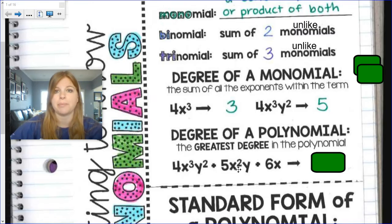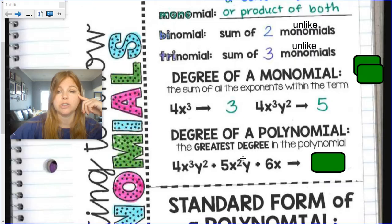Look at the second term separately. 2 plus, remember there's an exponent of 1 here with the y. 2 plus 1 is 3. So the first term here has a degree of 5. The second term here has a degree of 3.